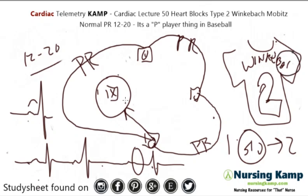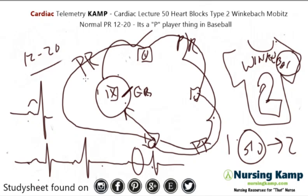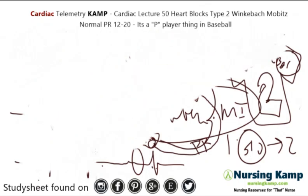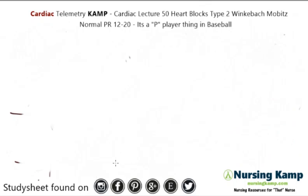Wenckebach — go back — because you missed a conduction, you missed a QRS. He takes a longer route first, then longer at the second, and then so long that he misses the third base and there's no contraction. But he continues on after that. That is Type 1, second degree — Wenckebach. It's generally caused by an inferior MI. Wenckebach is always inferior to Mobitz in terms of severity.